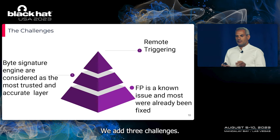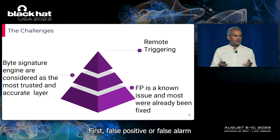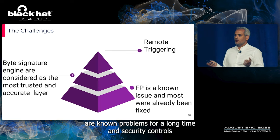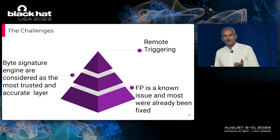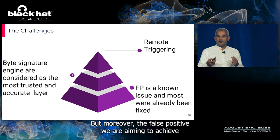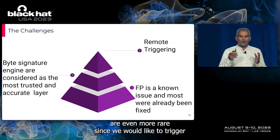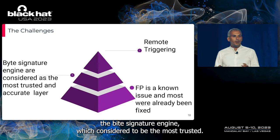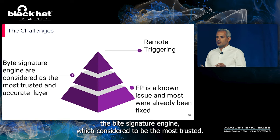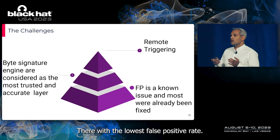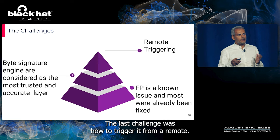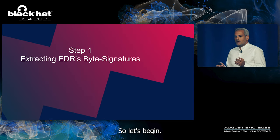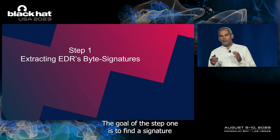We had three challenges. First, false positives are a known problem, and security controls installed on hundreds of millions of endpoints are already probably immune to false positives. Moreover, the false positives we are aiming to achieve are even more rare, since we want to trigger the byte signature engine, which is considered the most trusted layer with the lowest false positive rate. The last challenge was how to trigger it remotely.